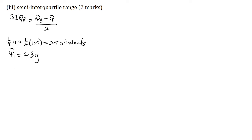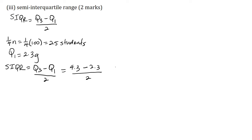Now I can calculate the semi-interquartile range. SIQR is equal to Q3 minus Q1 all over 2, which is equal to 4.3 minus 2.3, all over 2. This is equal to 2 over 2, which is equal to 1. Therefore, the semi-interquartile range is equal to 1 gram.